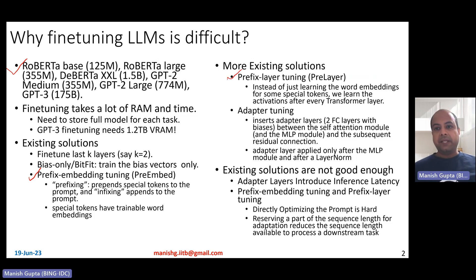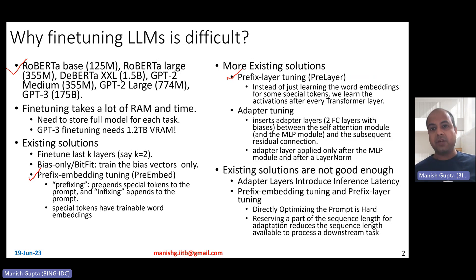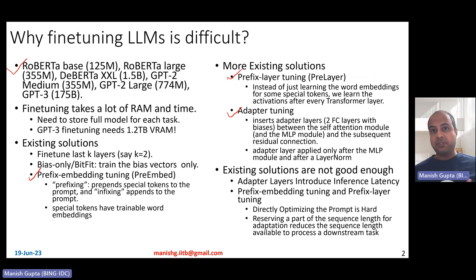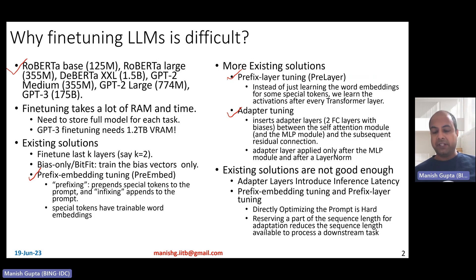A variation called prefix layer tuning trains not just the word embeddings but also other layers — specifically the activations after every transformer layer. This has more parameters to fine-tune, but still considerably fewer than full fine-tuning since the prefixes are much smaller compared to the overall input sequence length. Yet another existing solution is adapters: extra layers, typically two fully connected layers with biases and an activation after the first layer, inserted between the self-attention module and the MLP module. One popular variation applies the adapter layer only after the MLP, not after the self-attention module.